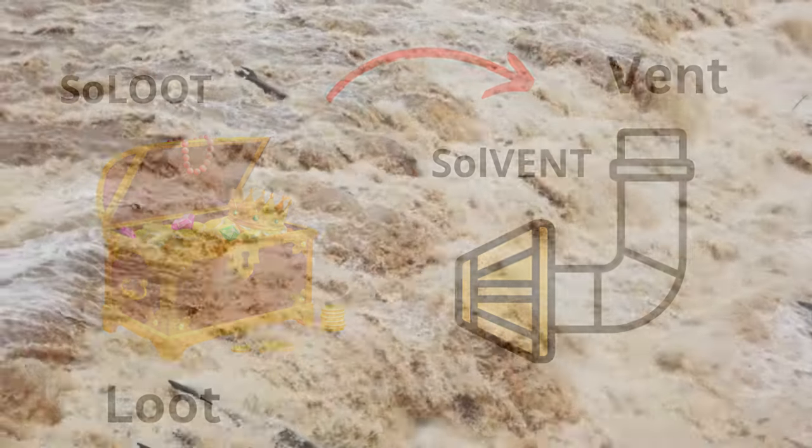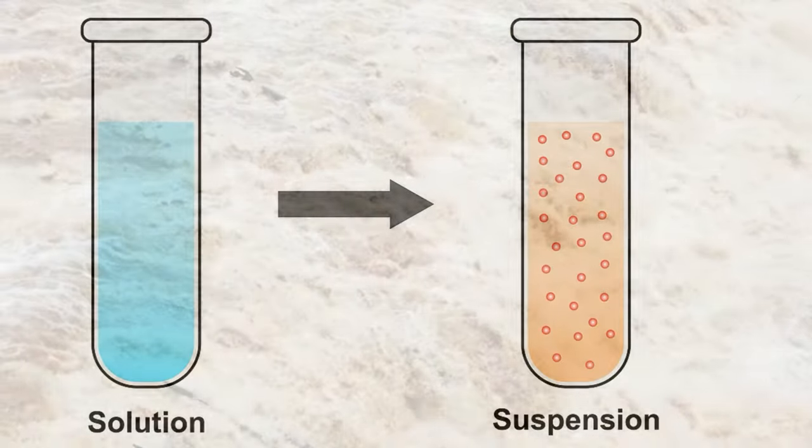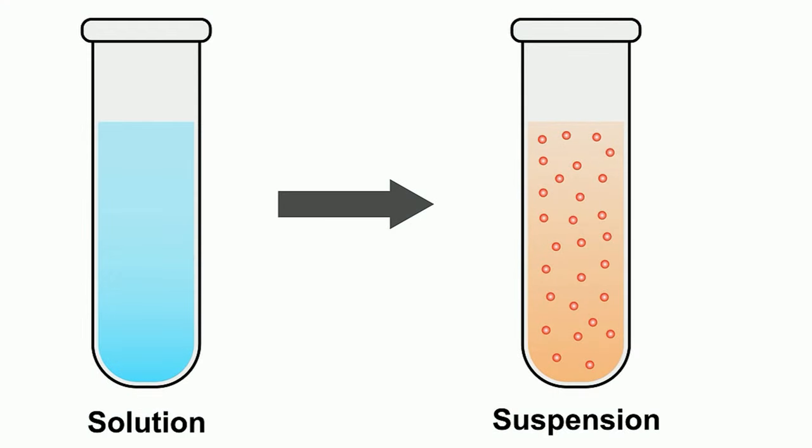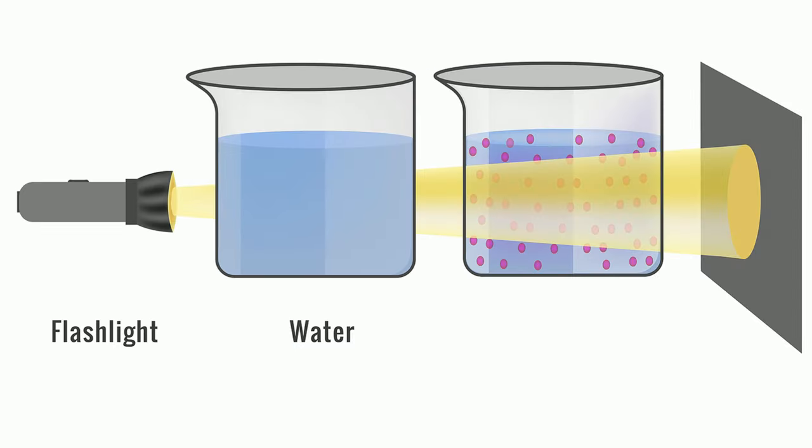A suspension is a mixture of a fluid with undissolved particles in it. The solute particles may be visible and will settle over time. In addition, the particles can be filtered out. Light is visible when it passes through a suspension.